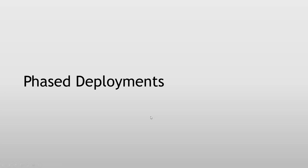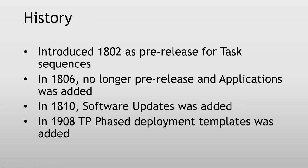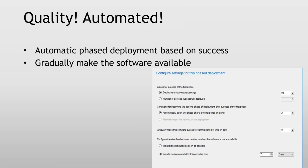Phase deployment — phase deployments have been around for a long time as well. In 1802 as a pre-release for task sequences. In 1806, no longer pre-release and applications were added. In 1810, software updates were added. In 1908 Technical Preview we can also have templates — I will show that in the next hour. So basically phase deployments I think are used too little, and they're getting better and better with each release. If you tested it out and didn't like it, test it again. There are new things added every time to make it even better.